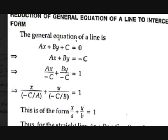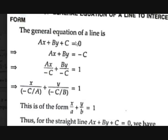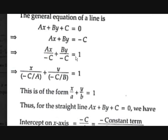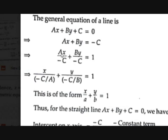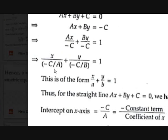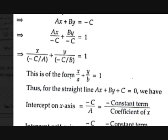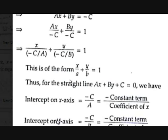If we send C to the other side it becomes Ax + By = −C. In intercept form we need 1 on the right-hand side, so dividing both sides by −C gives Ax/(−C) + By/(−C) = 1. Rearranging, this becomes x/(−C/A) + y/(−C/B) = 1, which is in the form x/a + y/b = 1.